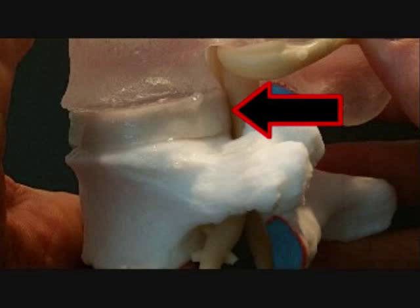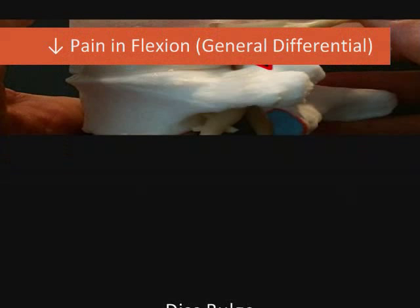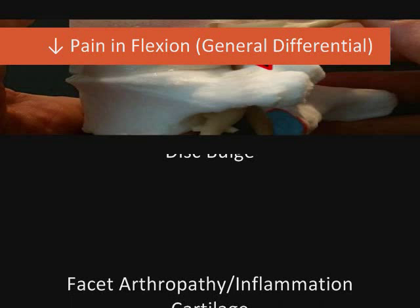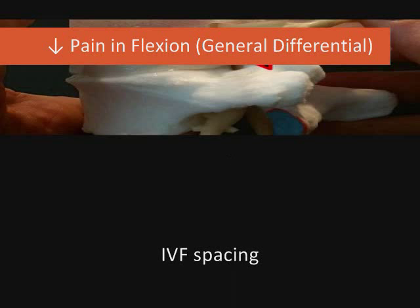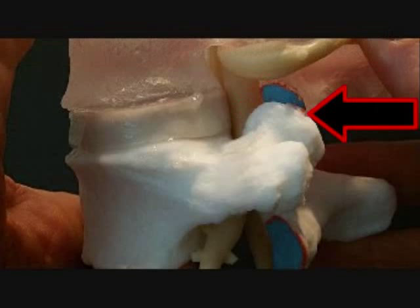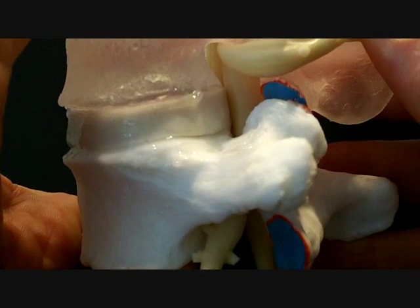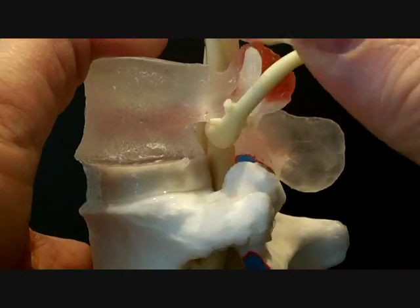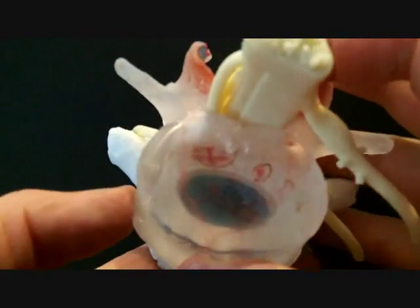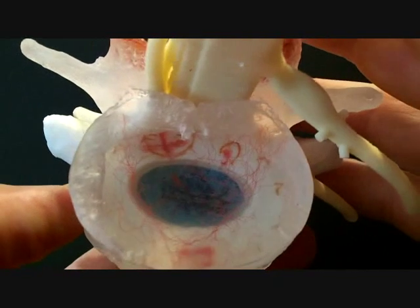If we have a decrease in pain in flexion, we have to be thinking about several things as well — this can be a helpful part of the differential. It could be a disc bulge that is retracting. We also know that under flexion, the facets are going to be less imbricated — they slide up and away from one another. The IVF also increases in space. It's very helpful to have patients look down into the model to show them the innervation of the annulus.